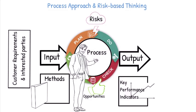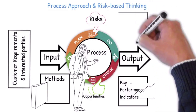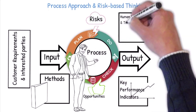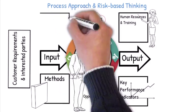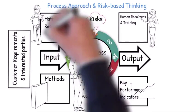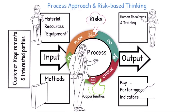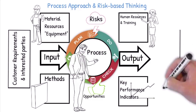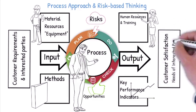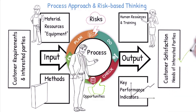Risk-based thinking enables the auditor to determine the factors that could cause the processes and the quality management system to deviate from the planned results, and to determine if controls were put in place to prevent or minimize negative effects and to make maximum use of opportunities as they arise to ensure that customer requirements will be achieved.